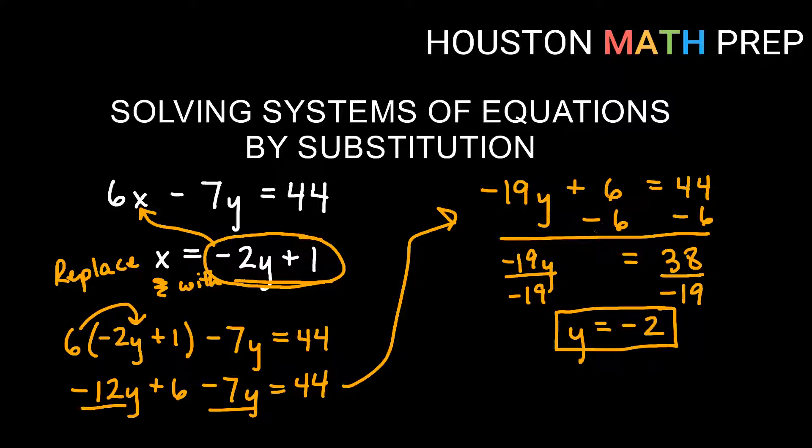And now I can simply, once I get my y answer, I can go plug it back into one of these and get my x answer. I'm going to plug this into the bottom one since this is already solved for x. So that will give me x equals negative 2y. Go ahead and plug in my answer for y, which was negative 2, plus 1. So that will give me that x is, this will be a positive 4, plus 1, and I think that's 5.